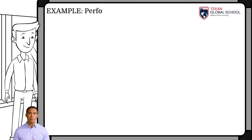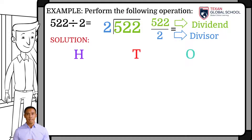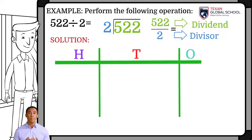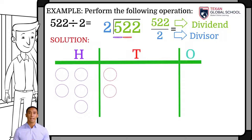In this next example, we will divide 522 by 2. The dividend is 522 and the divisor is 2. In this case, we have 3 digits in the dividend, so we will make a table indicating 1s, 10s, and 100s. Hence, we have 5 100s, so we draw 5 elements which each represent a 100. Now 2 10s, and we draw 2 elements which each represents a 10. Finally, 2 1s, and we draw 2 elements which each represent a 1.